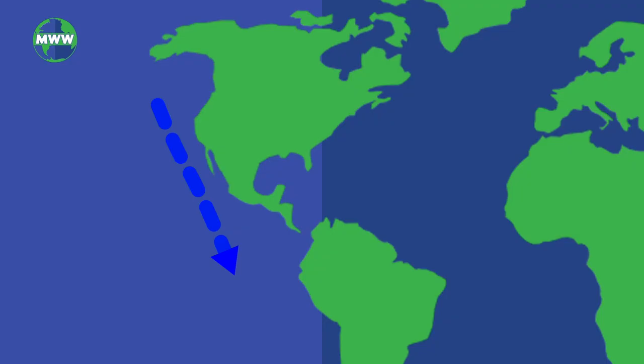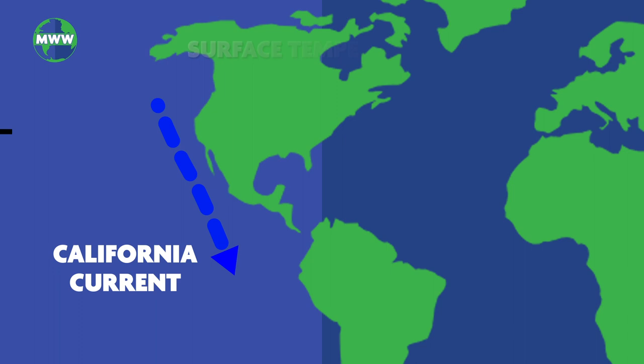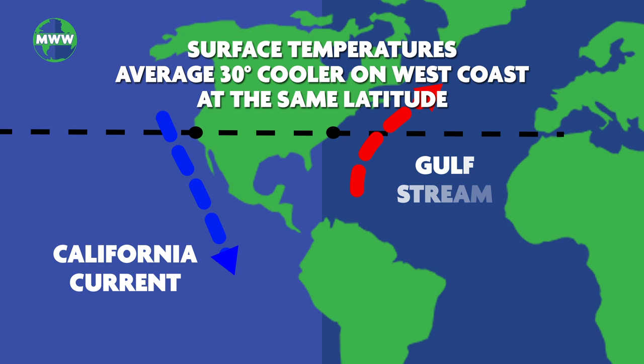Water on the west coast moves from the Gulf of Alaska, causing surface temperatures on the California coast to average 30 degrees cooler than areas at the same latitude off the east coast that are warmer due to the Gulf Stream.